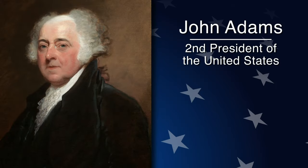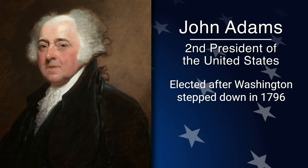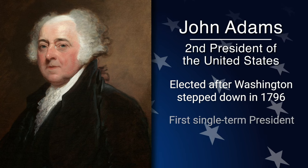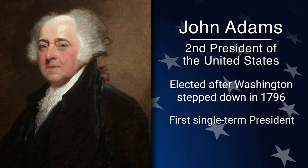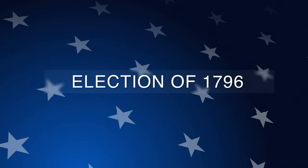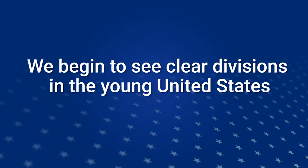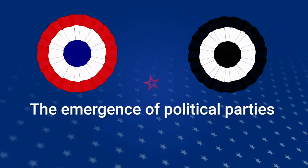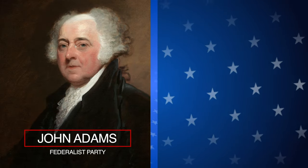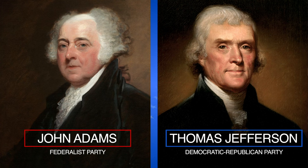John Adams was the second president of the United States. He was elected after Washington stepped down from office in 1796 and was our first single-term president. During the election of 1796, we begin to see clear divisions in the young United States and the emergence of political parties. John Adams represented the Federalist Party while Thomas Jefferson represented the Democratic-Republican Party.